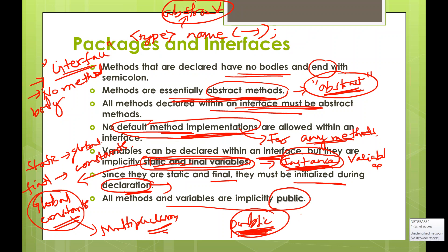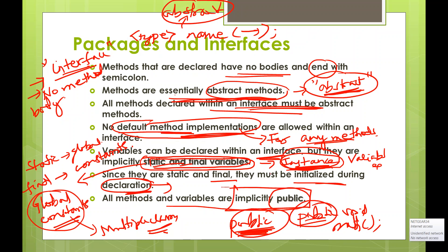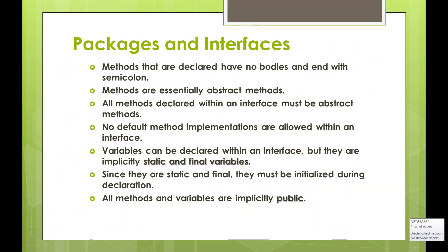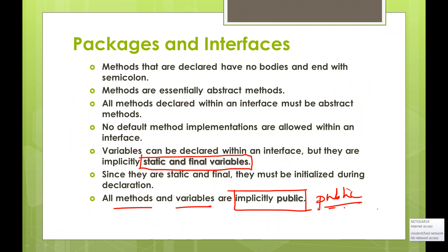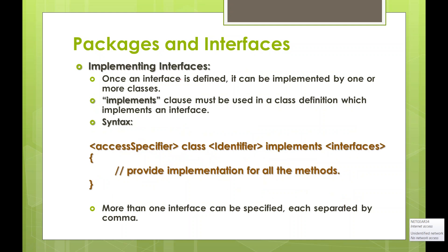Variables are static and final; both variables and methods are public. That is why we will not have instance variables — because all variables are static and final. Once you define an interface, it can be implemented in any number of classes. To implement an interface inside a class, we use the implements keyword in the class definition.